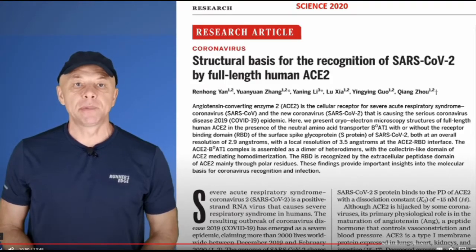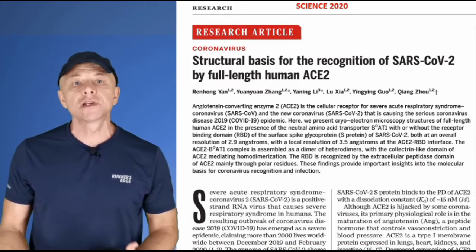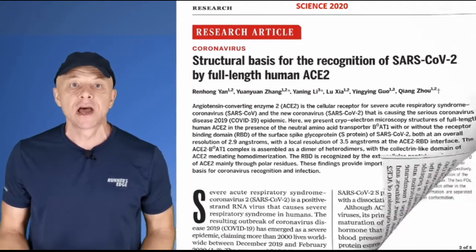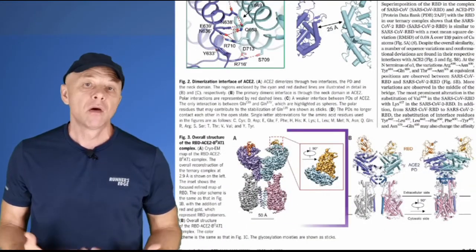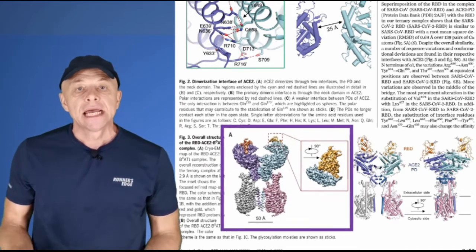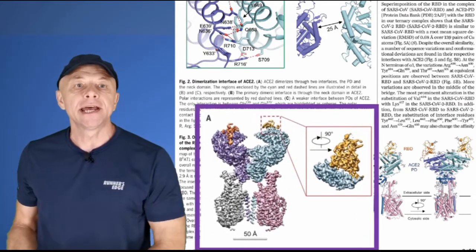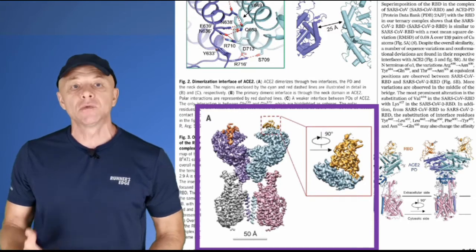The 2020 Science paper reports several high-resolution cryo-electron microscopy structures of the full-length human angiotensin-converting enzyme 2, or ACE2. It is solved as a complex with the amino acid transporter B081